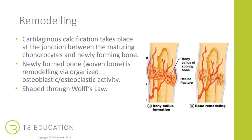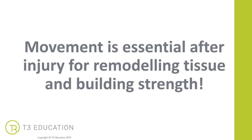Next is the remodeling phase, where cartilaginous calcification starts to take place at the junction between the maturing chondrocytes and the newly formed bone — the two ends of the initial fractures. The newly formed woven bone is remodelled and organised via the relationship and activity between osteoblasts and osteoclasts, and shaped through Wolff's law. This is where movement will start to support the remodelling of fracture sites. Movement is completely essential after an injury for remodelling tissue and building strength, both in soft tissue injuries and bone or fracture injuries.